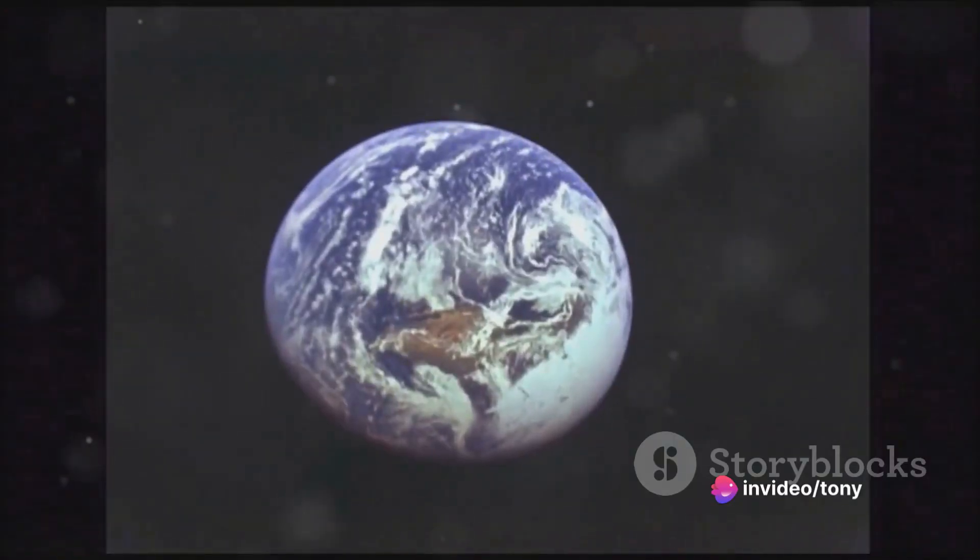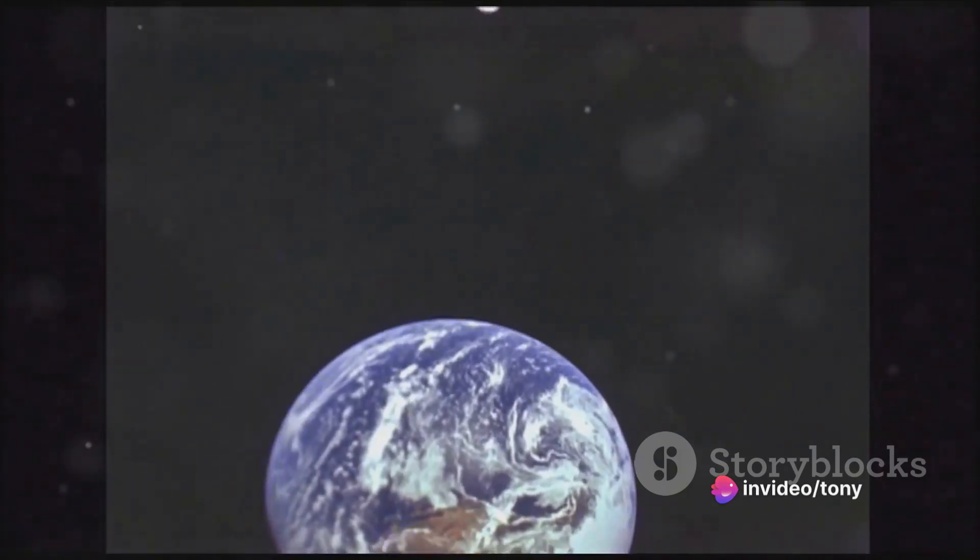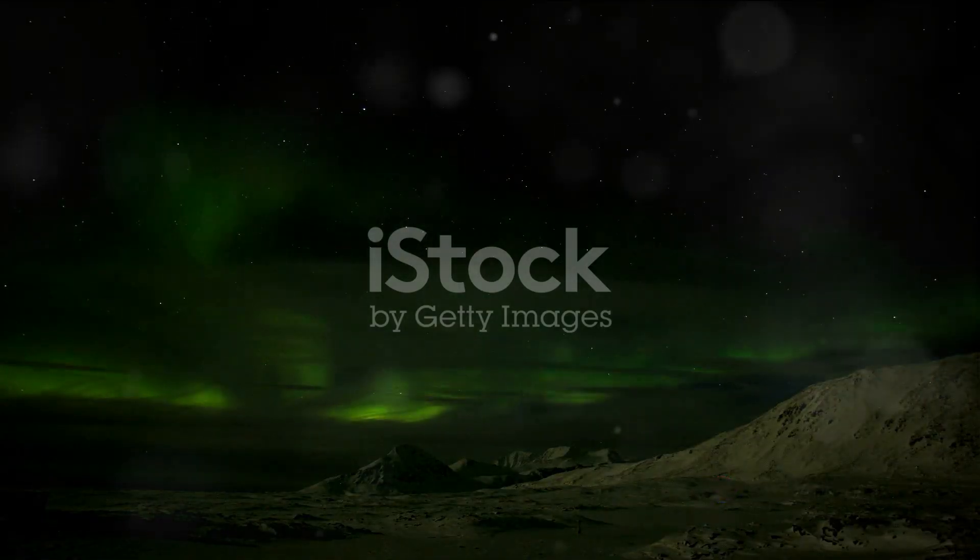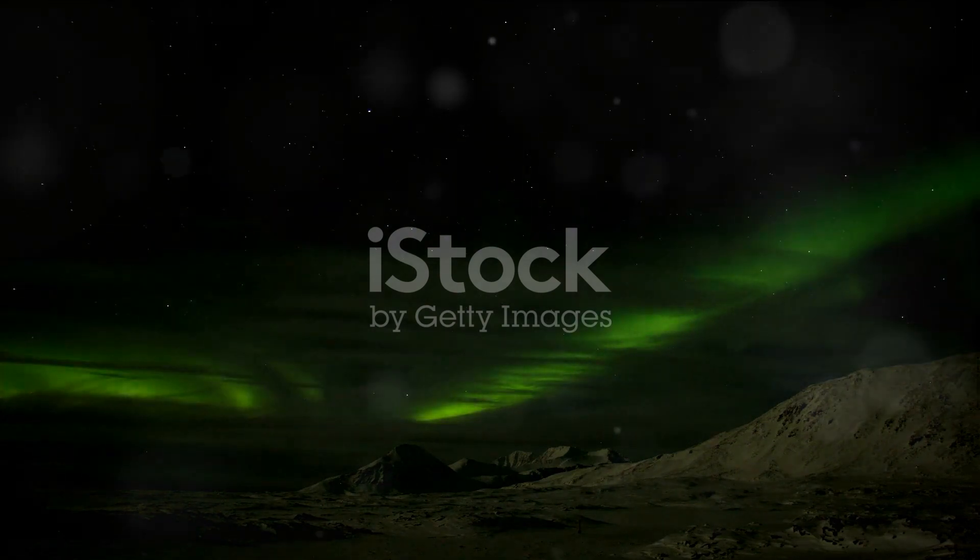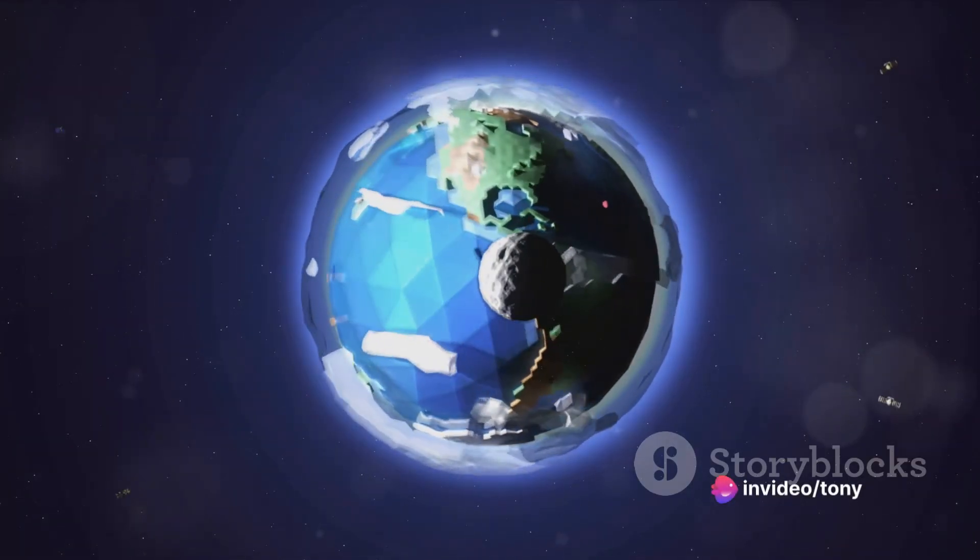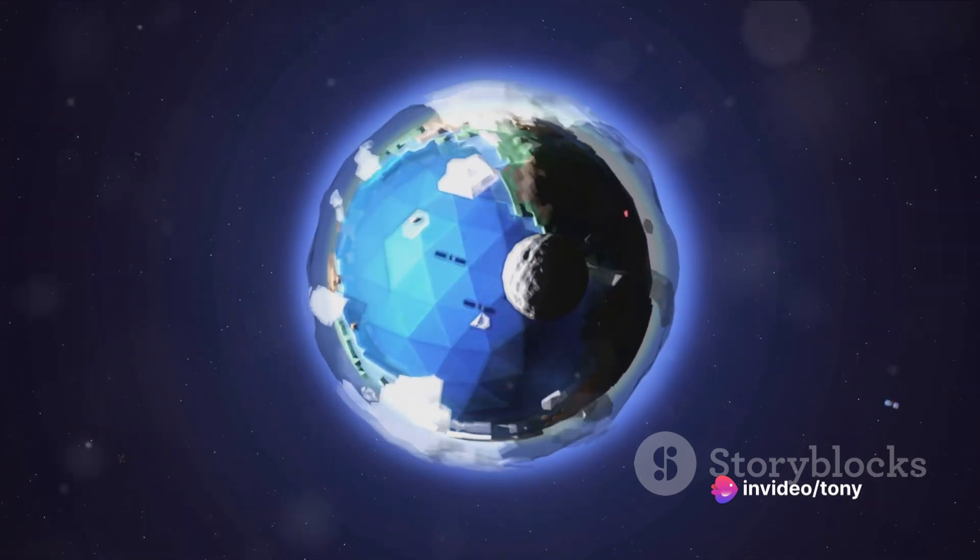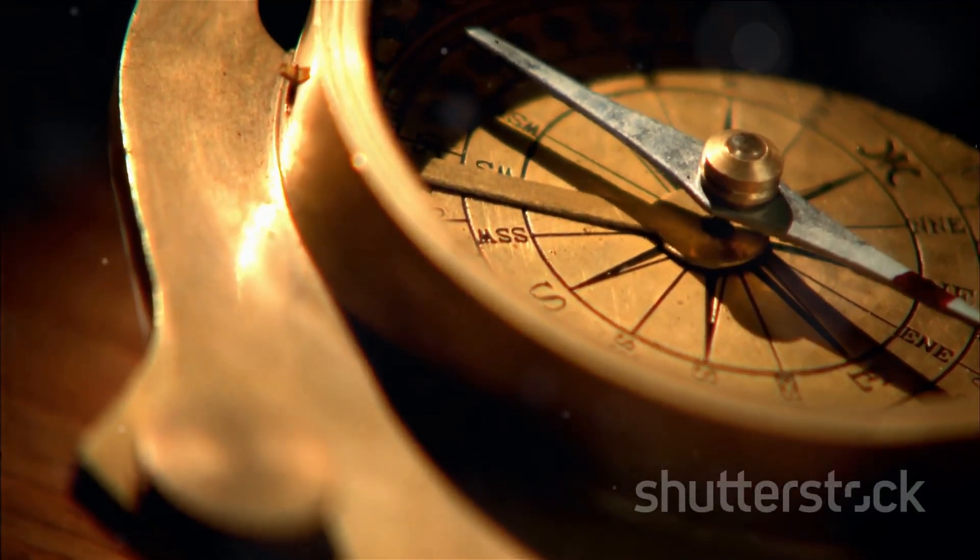To recap: one, the Earth behaves like a large magnet with a field stretching out into space. Two, this magnetic field is the result of electrical currents created by the movement of molten metals within the Earth's core. Three, the behavior of this field, particularly how it interacts with compasses, suggests that the Earth is not flat, but spherical.